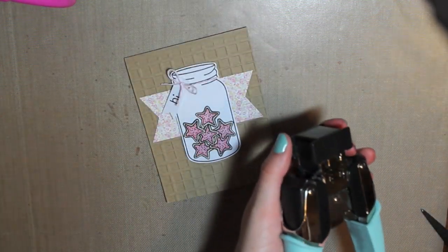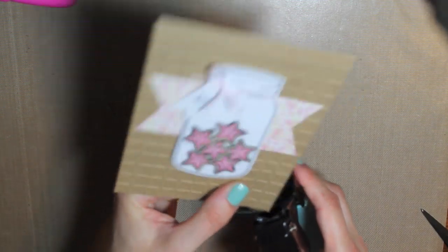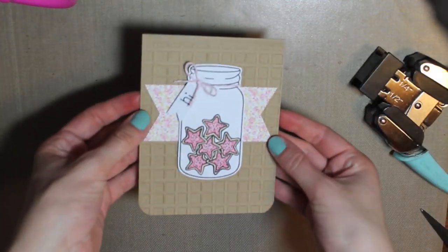And then one last step is to use my corner chomper to round each of the bottom corners. And that is my finished card.